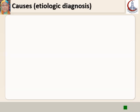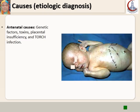What are the causes of Cerebral Palsy — or, in other words, the etiologic diagnosis when you formulate the diagnosis? Antenatal causes, occurring during pregnancy, include genetic factors, toxins, placental insufficiency, and TORCH infections.